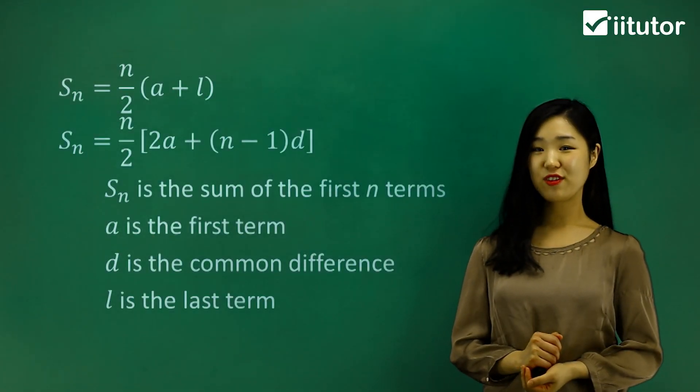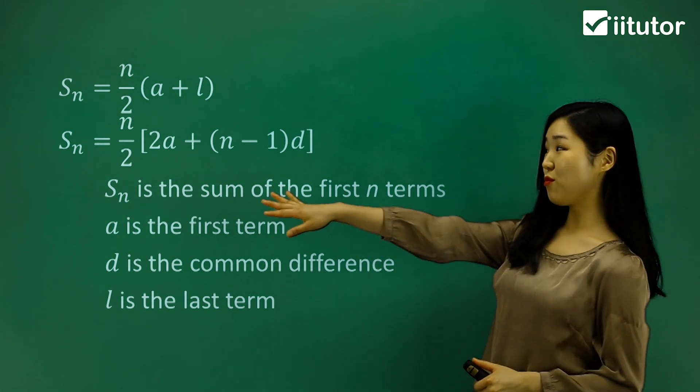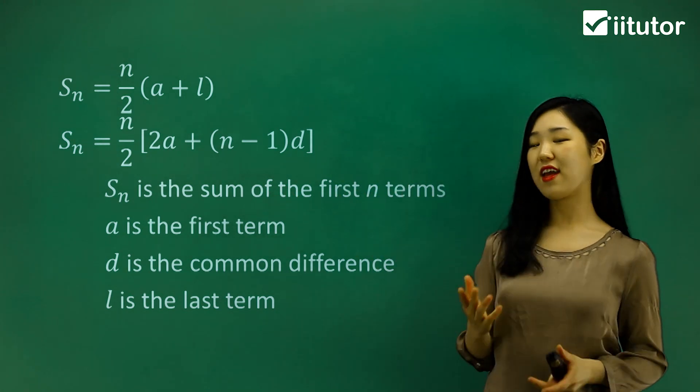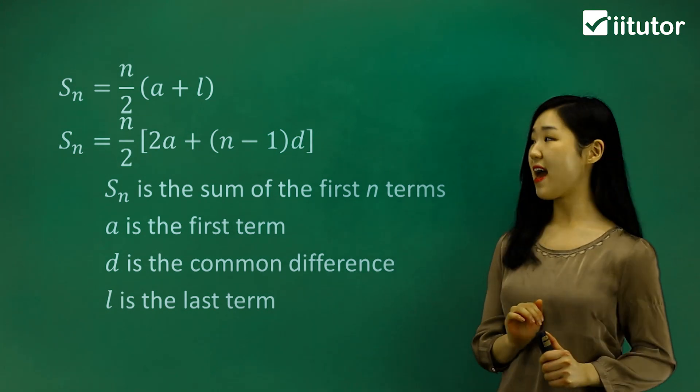Let's set up a sum formula using the two formulas that we have for sum. You know that Sn, we have two formulas for Sn. And you should know that Sn is the sum of the first n terms. And there's two formulas.